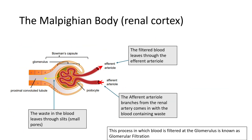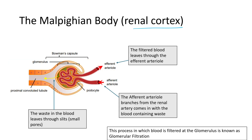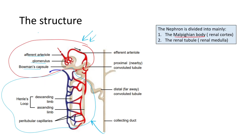In this video we're only going to look at the Malpighian body, as covering the renal tubule would take too long — I'll make another video for that. The Malpighian body, found in the renal cortex, has several parts: the afferent arteriole, the glomerulus, and the Bowman's capsule. You can also see the afferent arteriole in the full diagram.